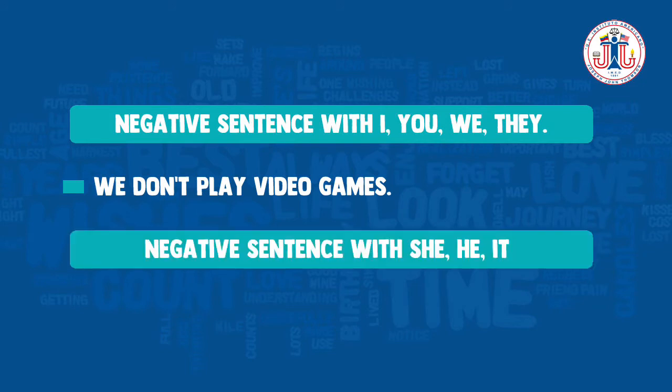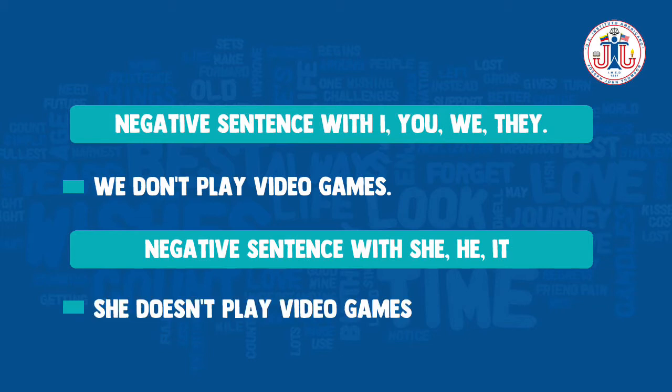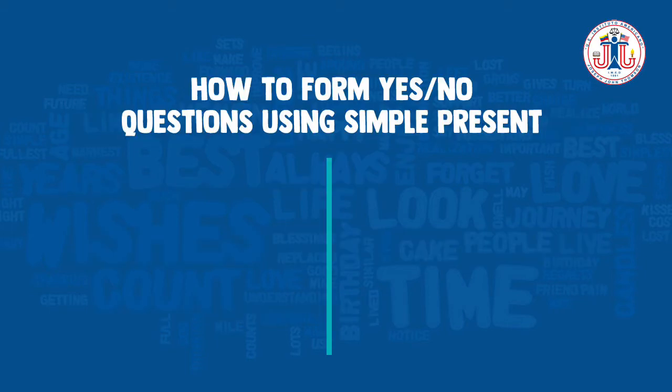Negative sentences with she, he, or it. For example, 'she doesn't play video games.' In this case, when you are talking about the third person, you have to use doesn't.